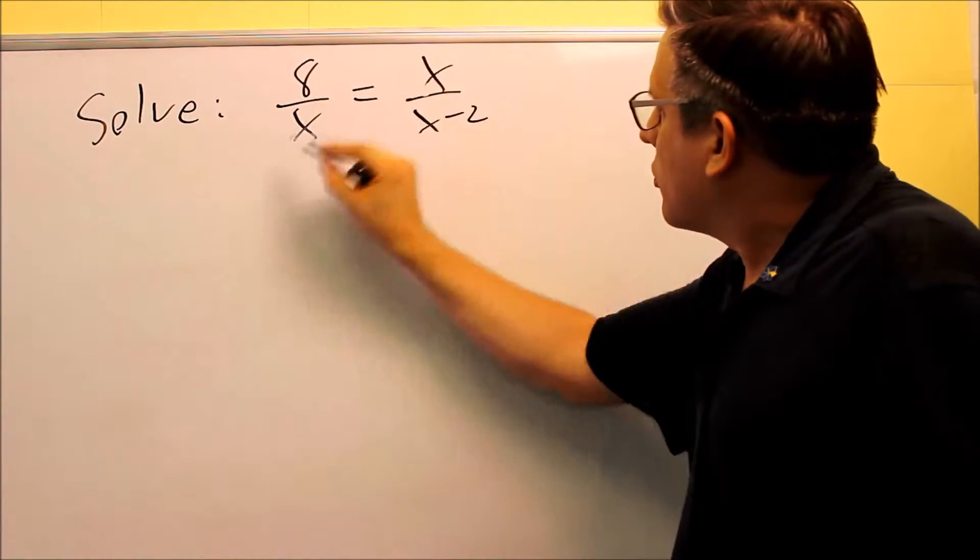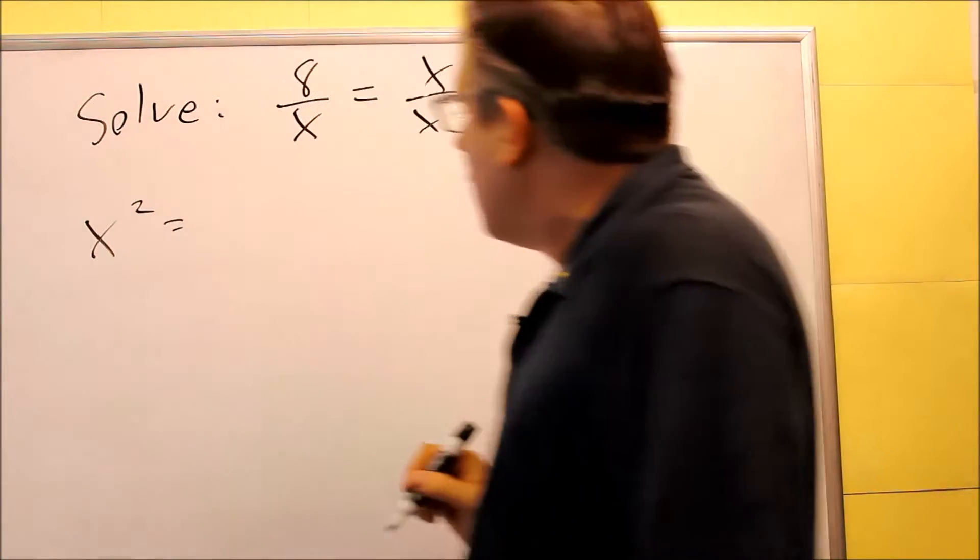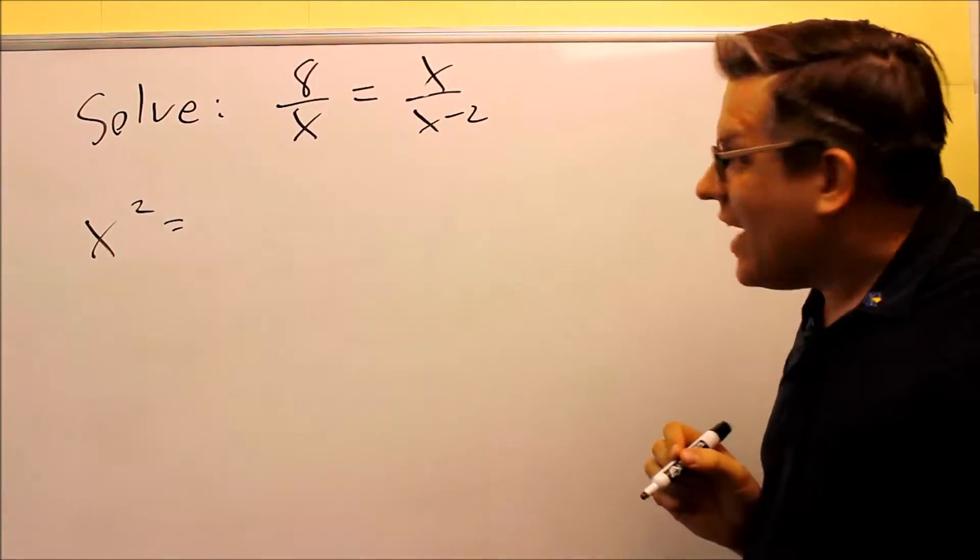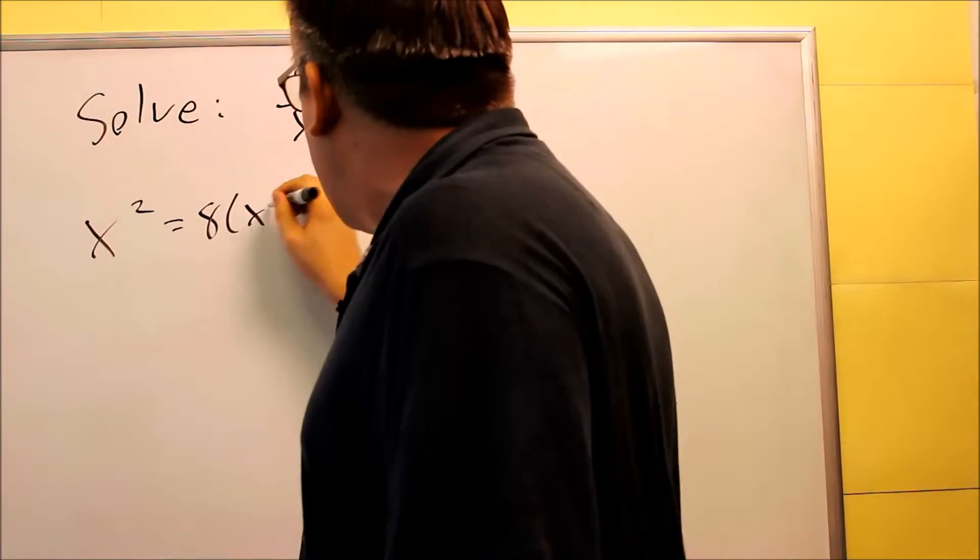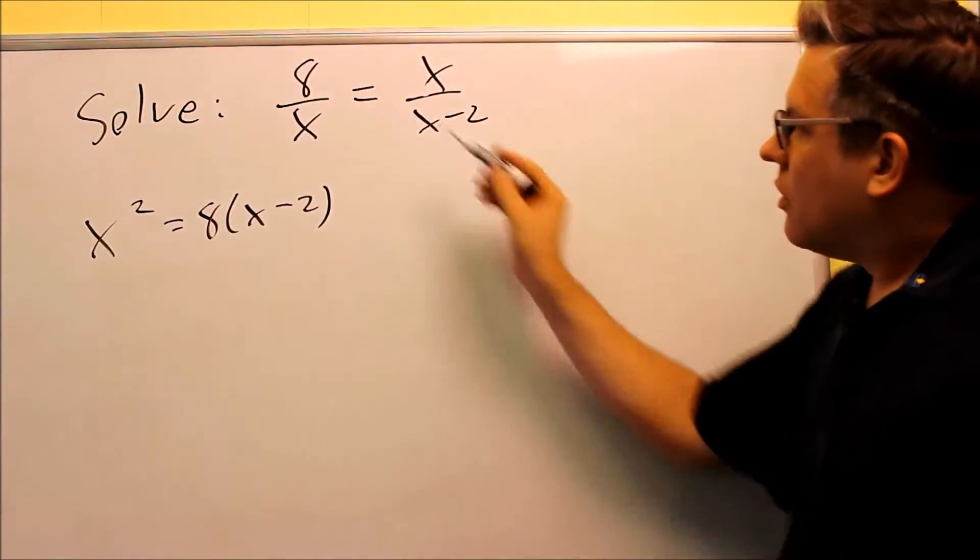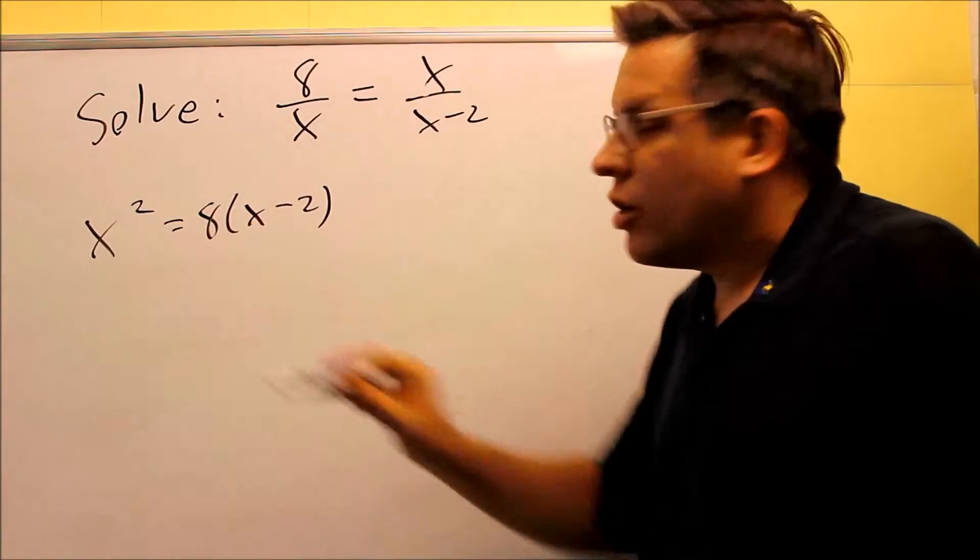I'll do this one first. X times X gives you X squared. And equals, and then we're going to multiply these. So we're going to do 8 times X minus 2. Okay, so cross multiply, we do that. Again, we're adding exponents here, so that's why you get X squared.